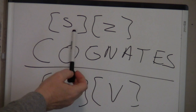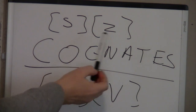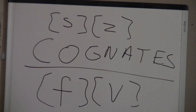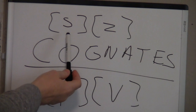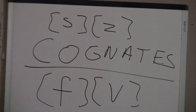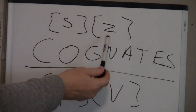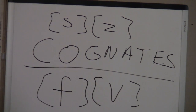Now go back and forth between F and V. Do the same thing with S and Z — go back and forth and feel your larynx. You'll notice that as you're doing the S sound, you don't feel vibration, and as you're doing the Z, you do.